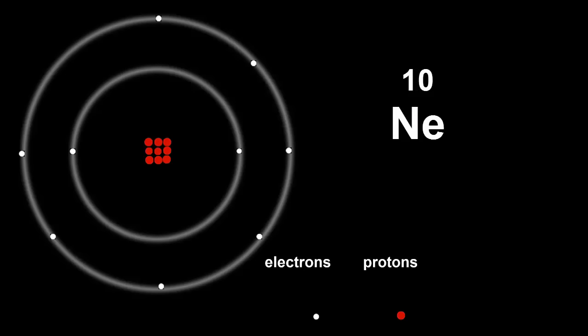Number ten, neon. Ten protons and ten electrons. Electron configuration, two, eight. Two electrons in the first shell, and eight in the second shell.